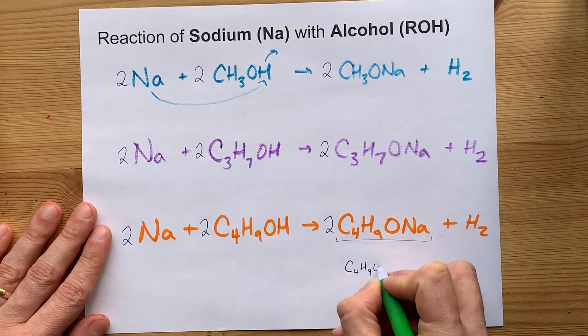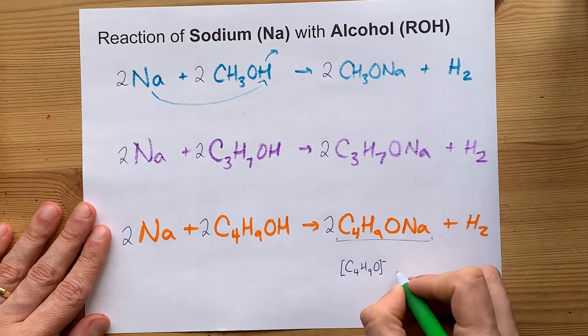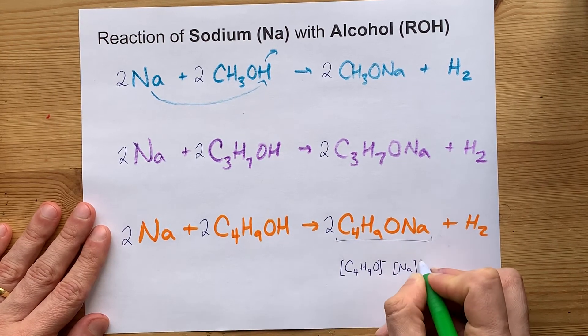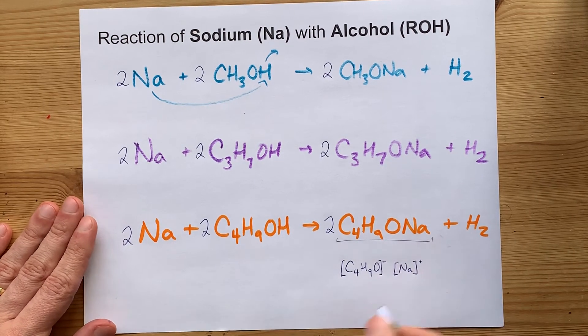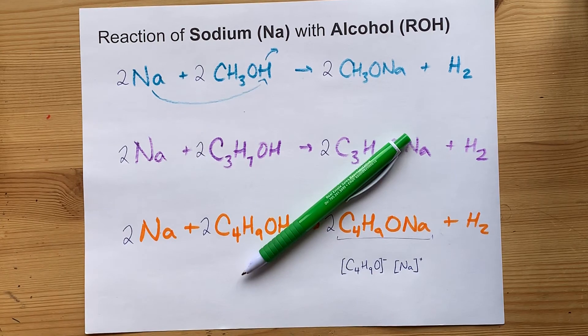This is C4H9O with a minus charge on it, and then the Na has a plus charge on it, but the ionic bond helps keep those two attracted to each other. That's just the way it is.